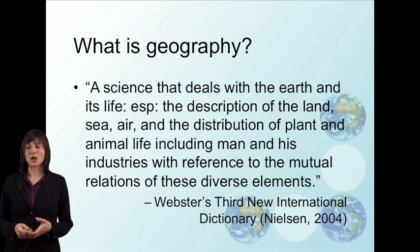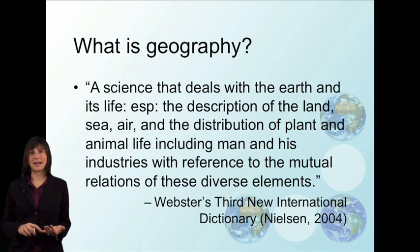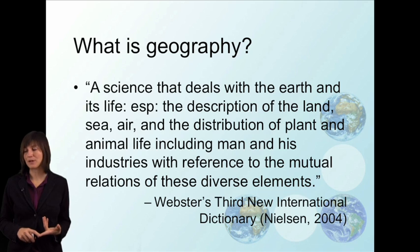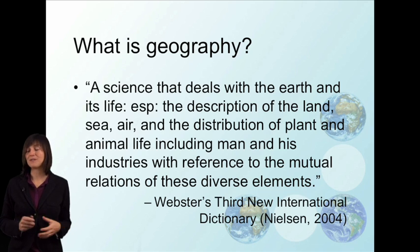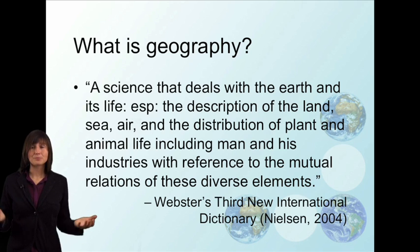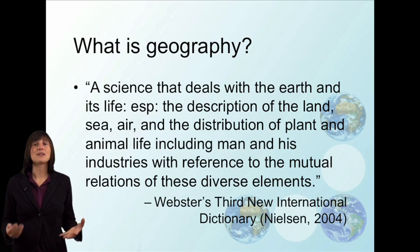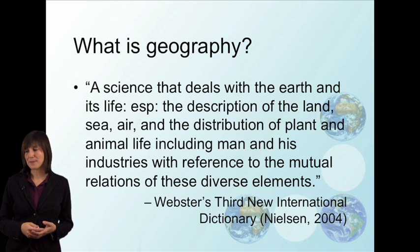Another definition of geography calls it a science that deals with the earth and its life, especially the description of land, sea, air, the distribution of plant and animal life, including man and his industries, with reference to the mutual relations of these diverse elements. So pretty much everything. You can see that this is a very broad discipline, but one of the key aspects, again, is where things are located and the relationships between those different types of things.